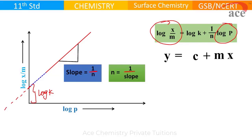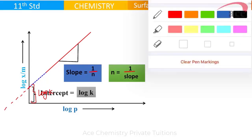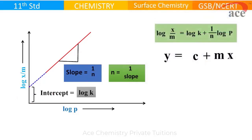The 1 by n value we get from slope. Slope is 1 by n, so n is 1 upon slope. This intercept which we said just now is log k value. I repeat: a graph of log x by m versus log P gives a straight line not going through origin, but cutting the y-axis.